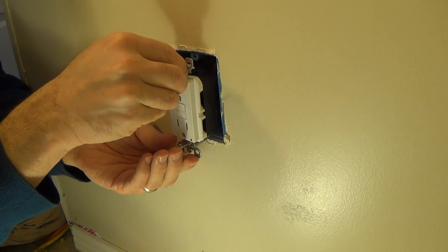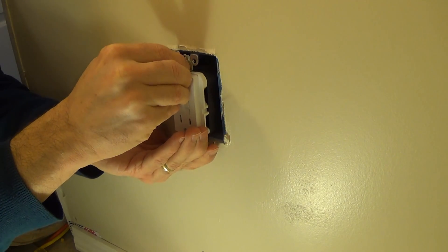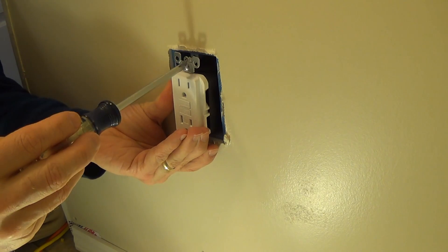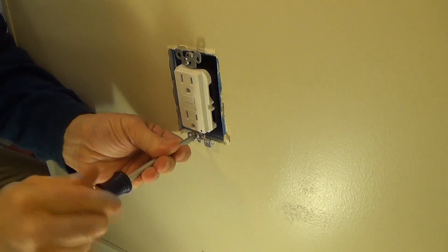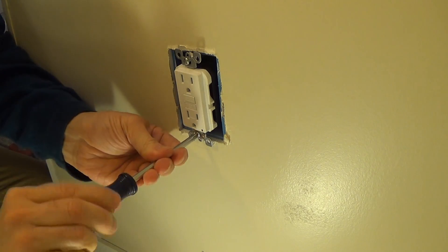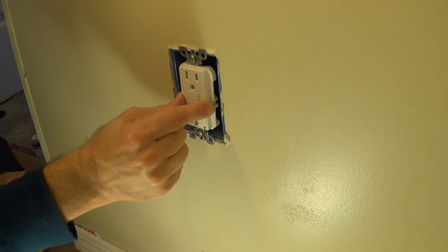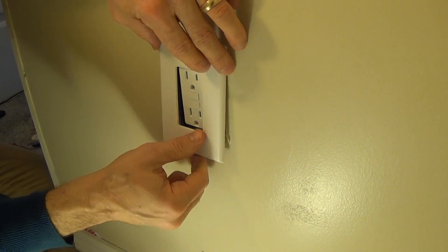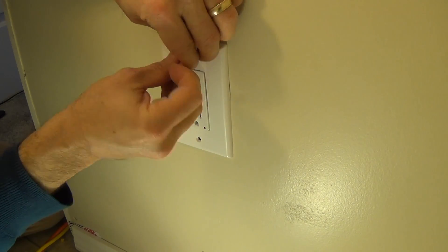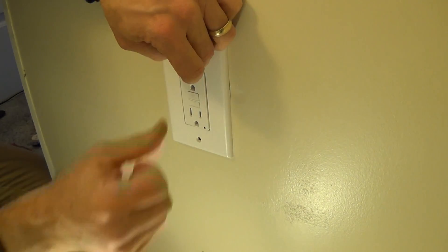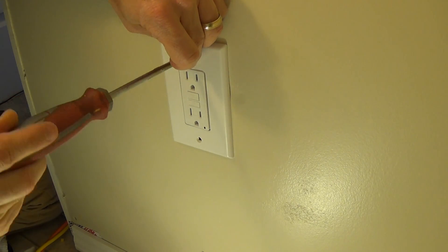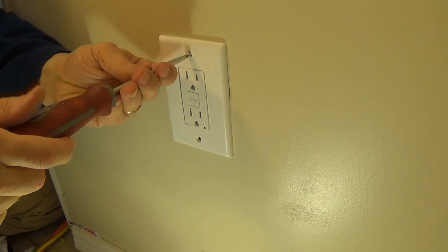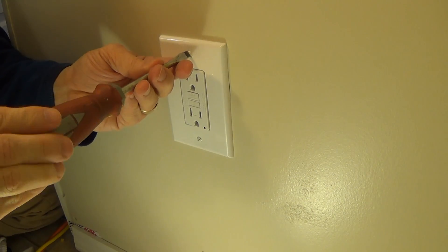And you just kind of depress it in and then secure the screws to the box. Then once the receptacle's all secure, you want to go ahead and put your faceplate, your new faceplate, back on.